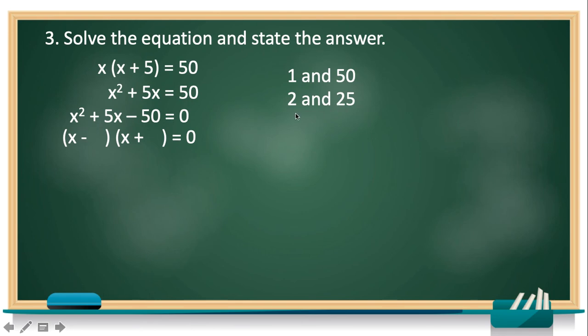We have 1 and 50, 2 and 25, and 5 and 10. Now let's identify which factors is appropriate. Let's check them by adding or subtracting the factors, and should result to 5. So if we add 1 and 50, we get 51. And if we subtract 1 and 50, we get 49. So 1 and 50 is not the right pair. How about 2 and 25? If we add them, we get 27. But if we subtract them, we get 23. Still, that pair of factors is not the correct answer.